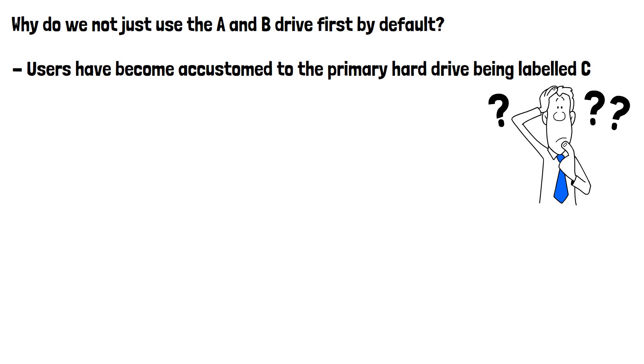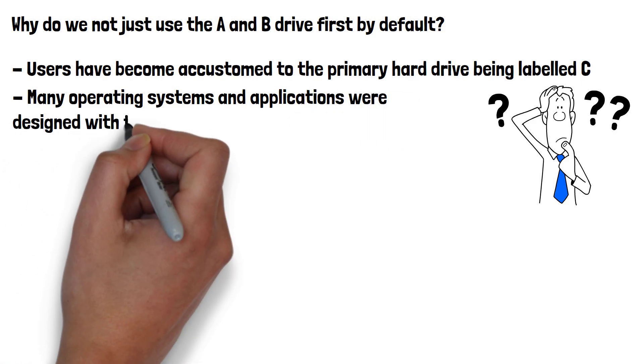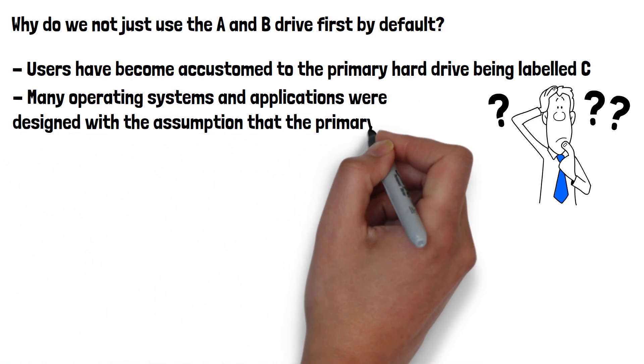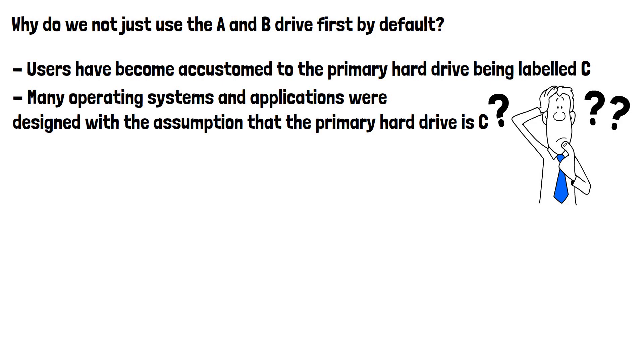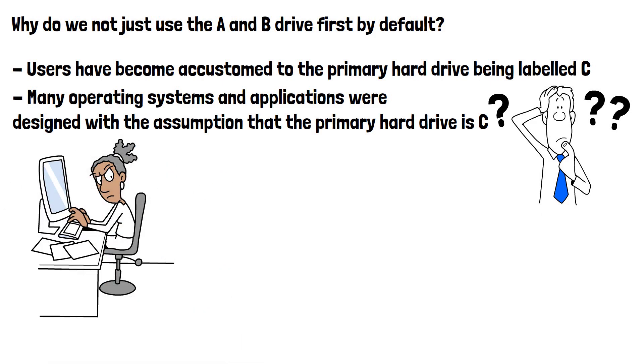Secondly, and perhaps more importantly, many operating systems and applications were designed with the assumption that the primary hard drive is C. Changing this convention would require modifications to some existing software. Understandably, developers don't want this unnecessary additional work, as it adds virtually nothing to the user's experience.